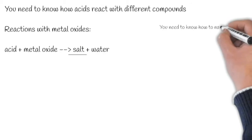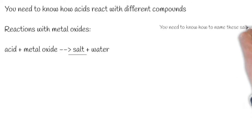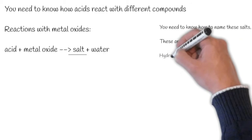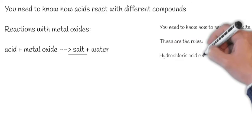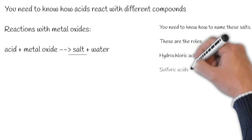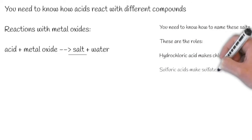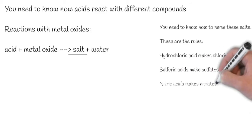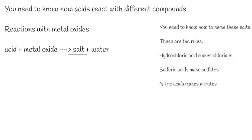We also need to know how to name these salts. There are a few rules: hydrochloric acids make chlorides, sulfuric acids make sulfates, and nitric acids make nitrates.